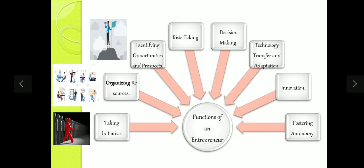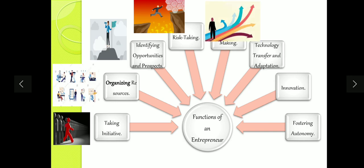Third, identifying opportunities and threats — successful entrepreneurs on a constant basis identify opportunities and check where they're going, which we will study in detail in the process of entrepreneurship. Fourth, risk taking — risk is a function of the entrepreneur. If a person is not taking risk and playing it very safe, growth will not come. Growth comes when the entrepreneur takes risk. Fifth, decision making — as a person with complete power, decision making belongs to the entrepreneur and it is his function to take decisions.